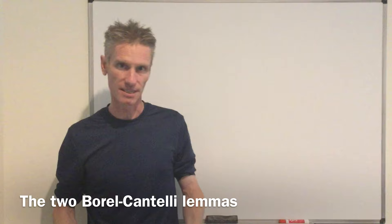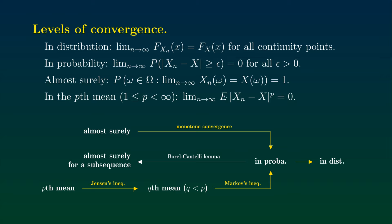The reason for that is the following. In the previous three videos, we proved the implications shown in the picture in yellow. In particular, we know already that convergence almost surely implies convergence in probability. Also, convergence in any of the L^p spaces implies convergence in probability, and convergence in probability implies convergence in distribution. Now to complete the proof of this picture, the last step is to show that convergence in probability also implies convergence almost surely of a subsequence to the same limit. For that, what we need to use is the first Borel-Cantelli lemma.